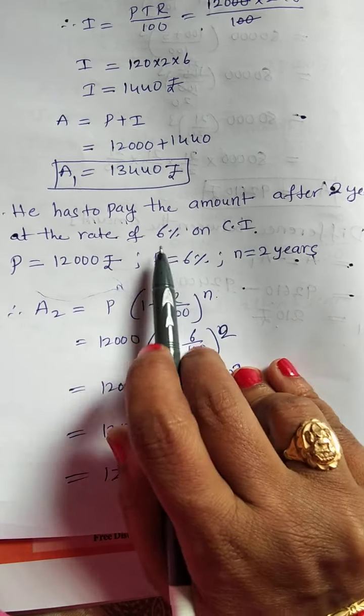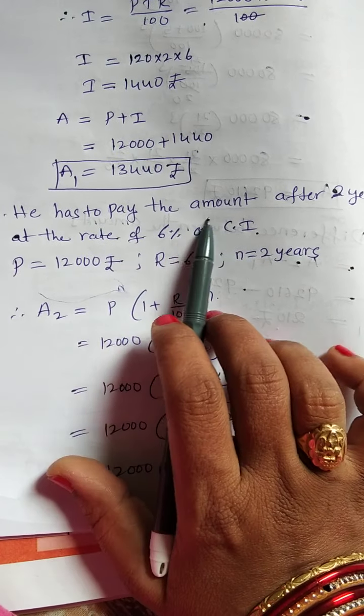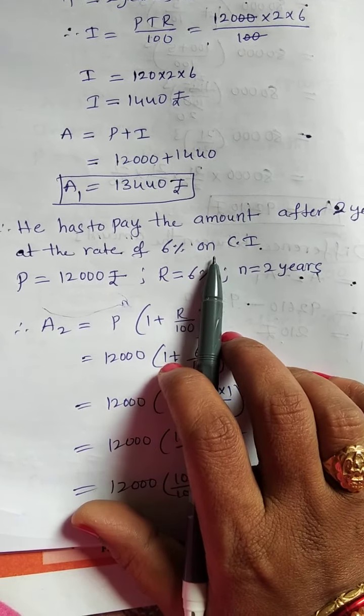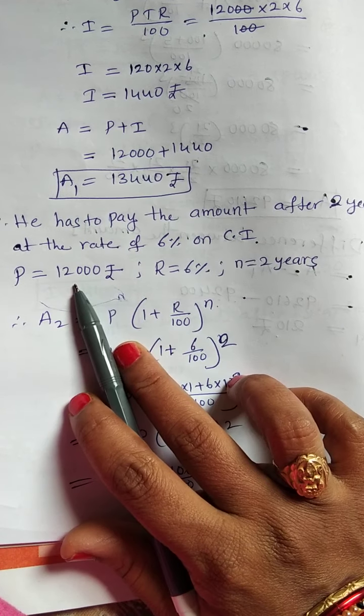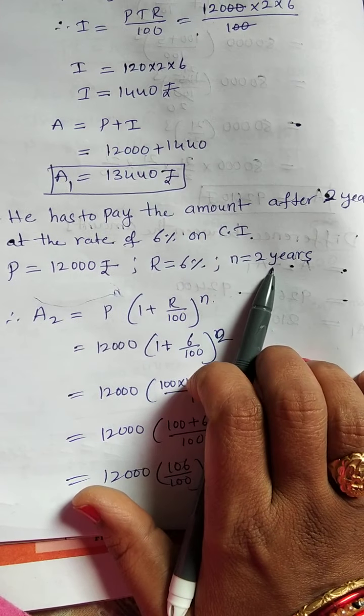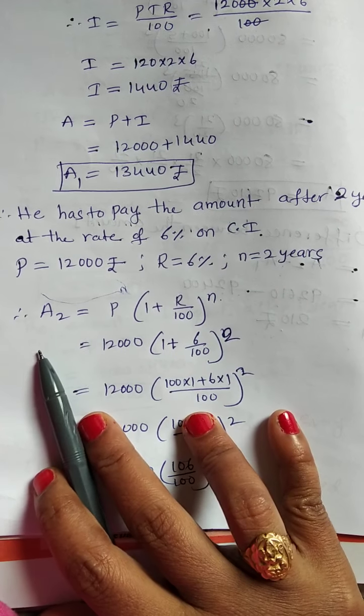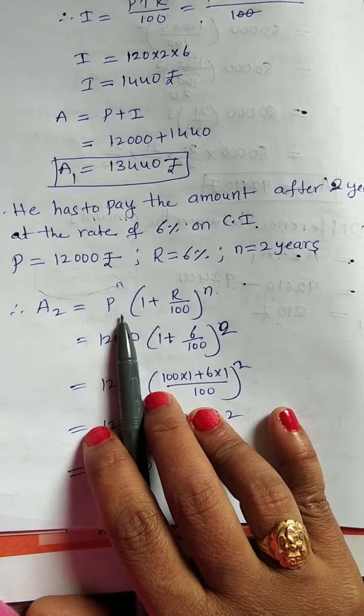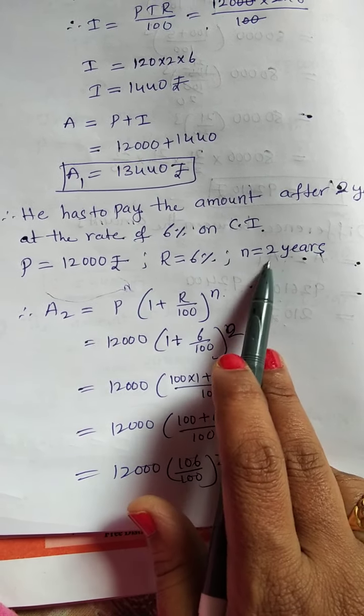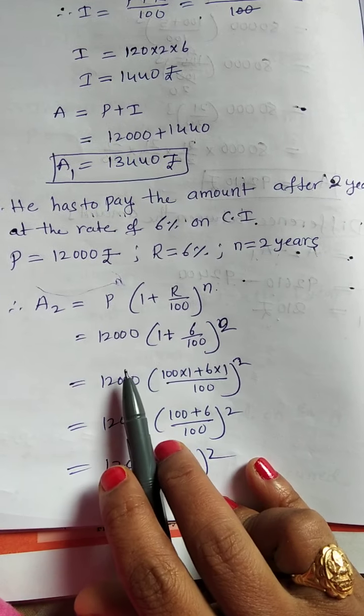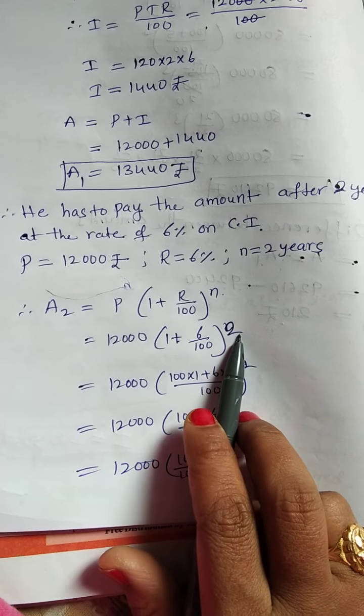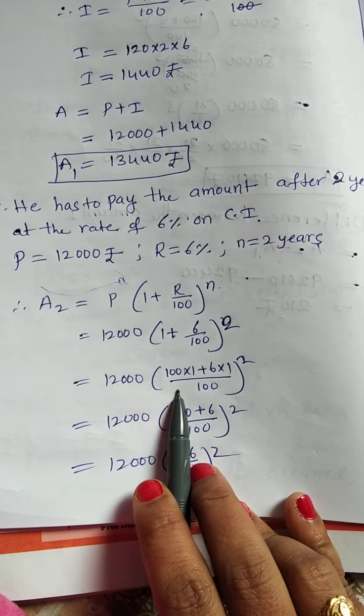Next, he has to pay the amount after 2 years at the rate of 6% on compound interest. So principal amount, 6%, N is equal to 2 years. Now, A2 equals P into 1 plus R by 100. Here, N is equal to 2 times after 2 years. So, 12,000 into 1 plus 6 by 100 whole power 2.